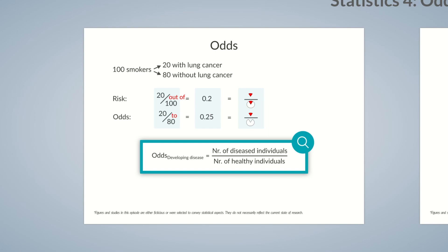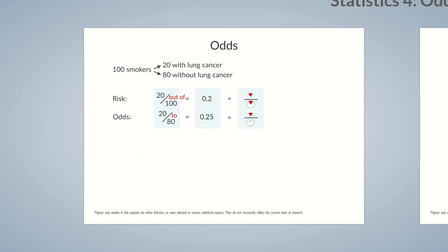If you compare the odds and risk values in our fictional study, you'll see that the results 0.2 and 0.25 are relatively close to one another. But that's not usually the case. Let's assume that not 20 of the 100 smokers developed lung cancer, but 99 — meaning only one exposed individual didn't develop lung cancer. If you'd like, pause the episode to calculate the new odds and risk values of the smokers.